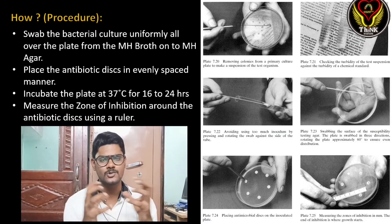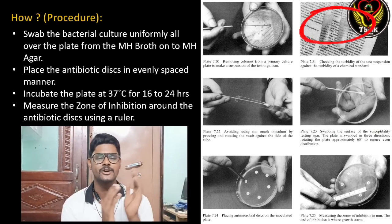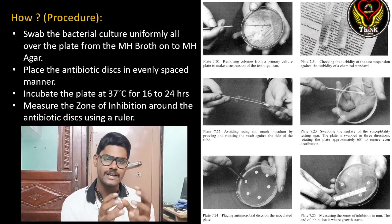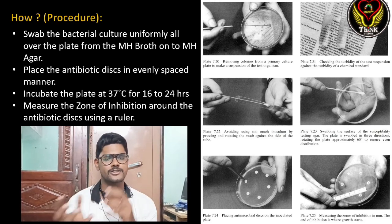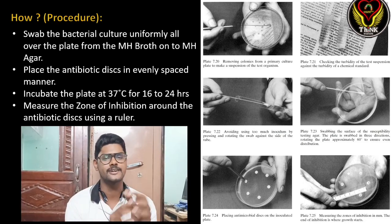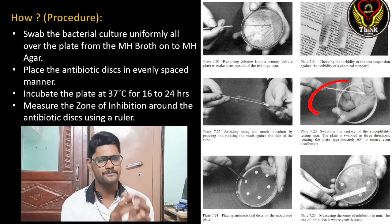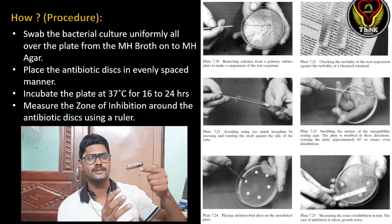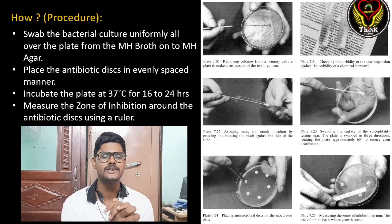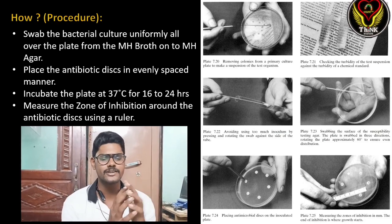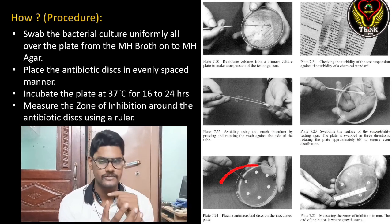We grow the isolated bacteria in Muller-Hinton broth and incubate it for 18 to 24 hours to achieve the 0.5 McFarland standard. Once our culture is ready, the second step is to swab the bacterial culture uniformly all over the agar plate — from the Muller-Hinton broth onto the Muller-Hinton agar plate — using a sterile swab.